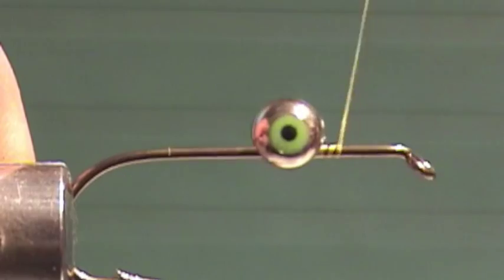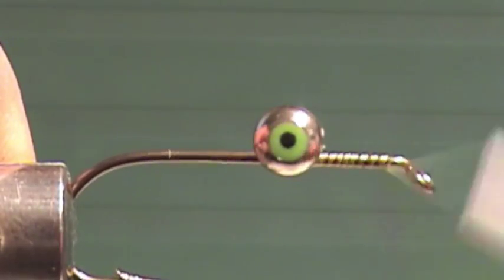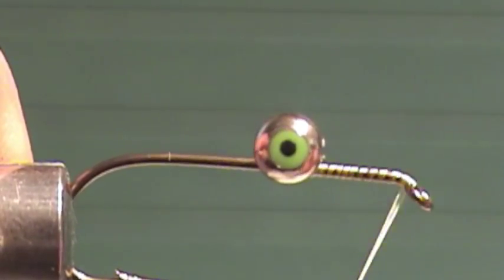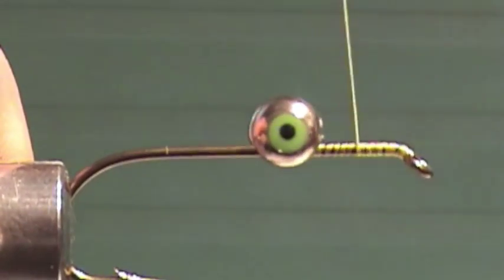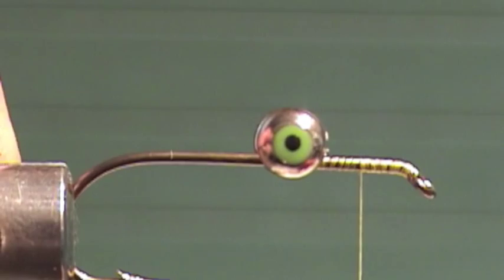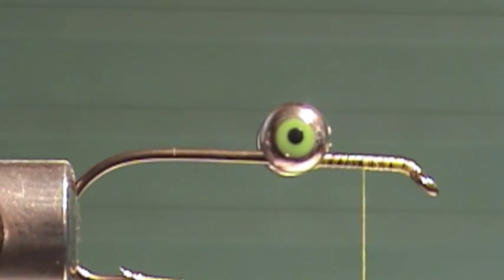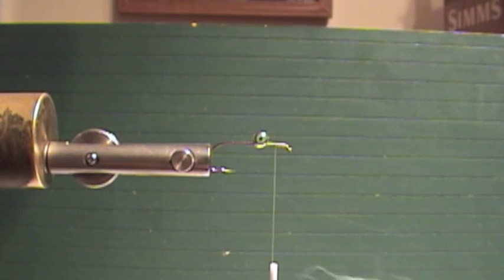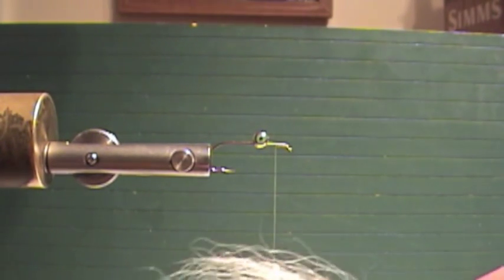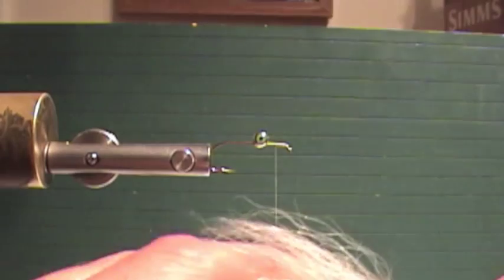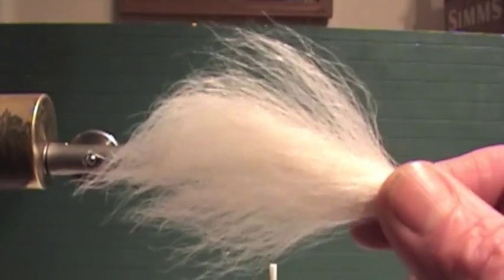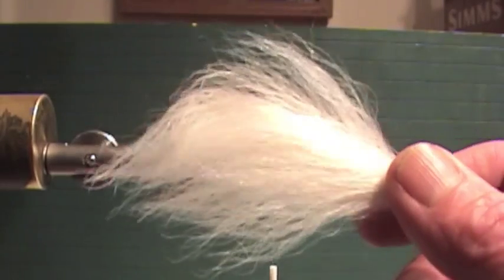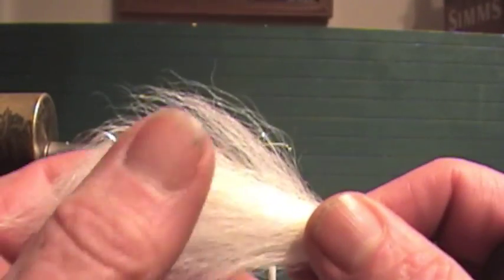Now I'm going to bring my thread up to the eye of the hook, then about halfway back. The size of this fly is not that large, so I'm able to use calf tail instead of buck tail. I like using calf tail because it flares less, a little bit easier to use.